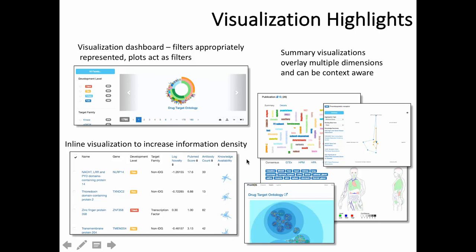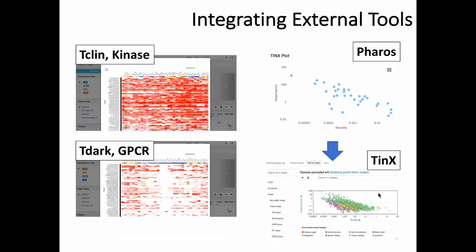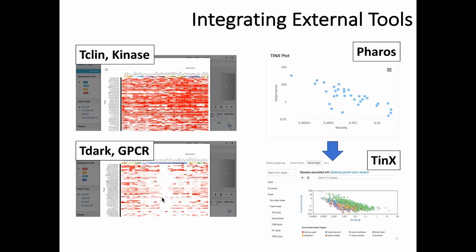Pharos integrates external tools. One example is the Harmonogram developed by Avi Maayan's group at Mount Sinai — their code was made available and we reuse it to generate Harmonograms. For example, the Harmonogram for all kinases in the Tclin category is largely filled, indicating a lot of data as expected. The corresponding Harmonogram for all GPCRs in TDar shows much more white space, reflecting less data available for these targets — consistent with their TDar classification.